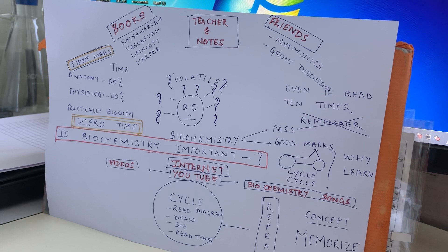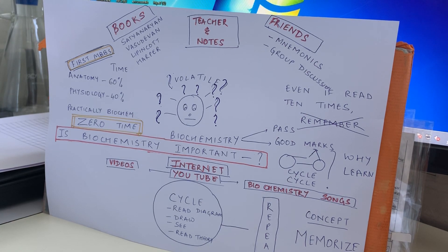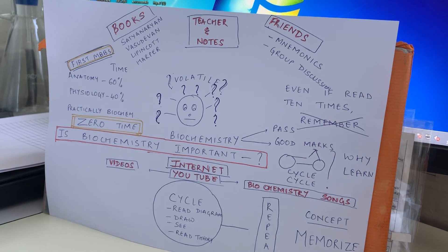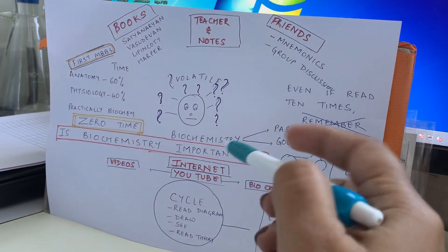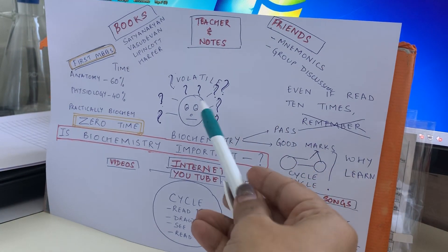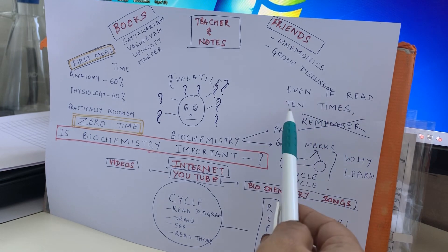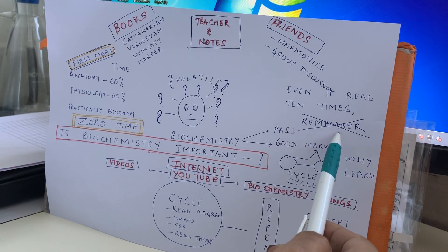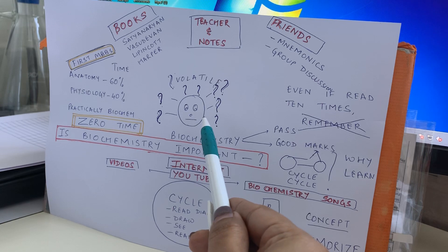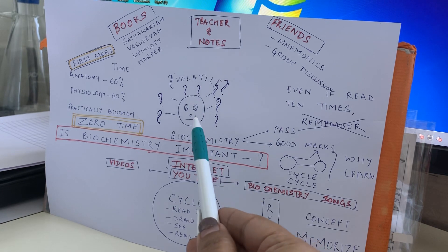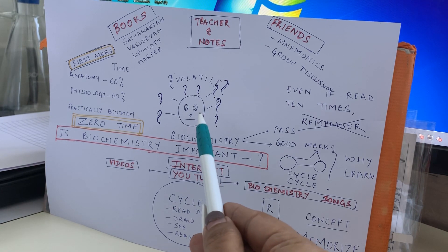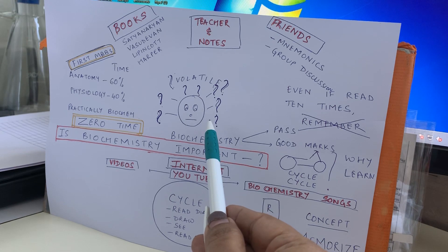Hi, I have again encountered one question regarding how do we study biochemistry. I just want to say that biochemistry, no matter how much you read, even if you read it ten times, you're not going to remember it because it is a very volatile subject. If you read today, you will not remember it by today evening.